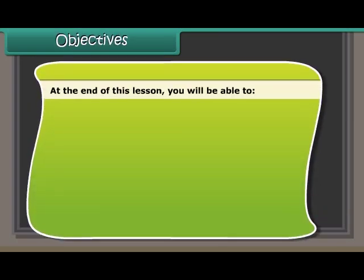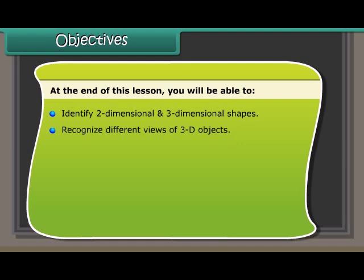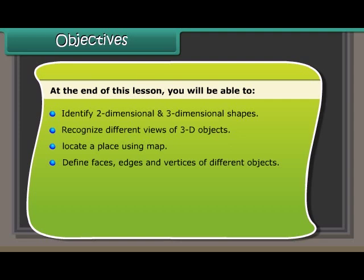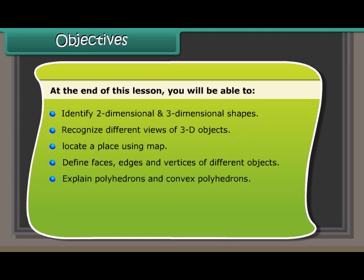Objectives: At the end of this lesson, you'll be able to identify two-dimensional and three-dimensional shapes, recognize different views of 3D objects, locate a place using a map, define faces, edges, and vertices of different objects, explain polyhedron and convex polyhedrons, describe prisms, discuss pyramids, and apply Euler's formula.